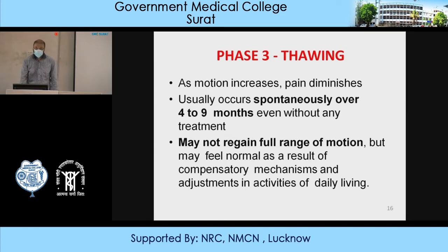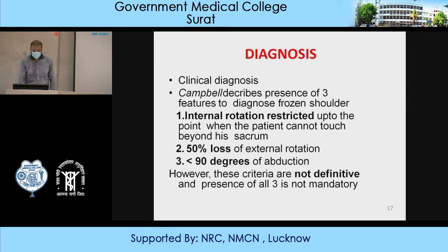How will we diagnose frozen shoulder? The clinical diagnosis describes three features: internal rotation is restricted to the point the patient cannot touch beyond the sacrum; 50% loss of external rotation at 90° of abduction. However, this criteria is not definitive and the presence of all three is not mandatory.